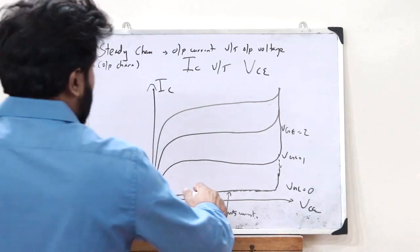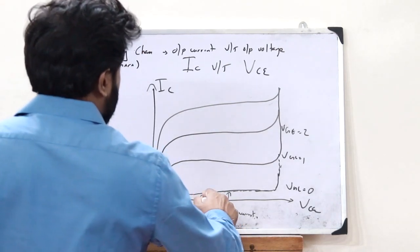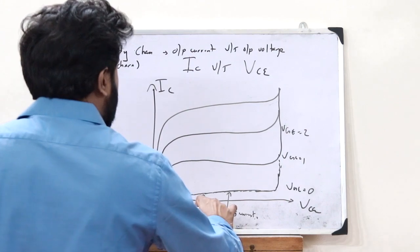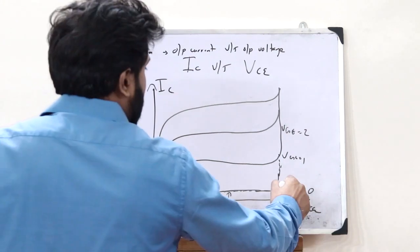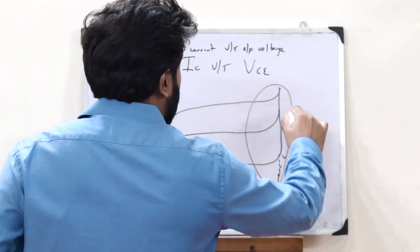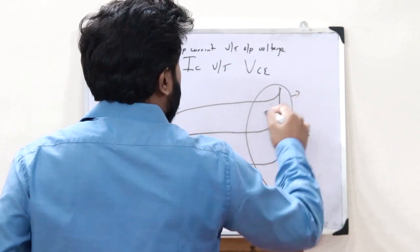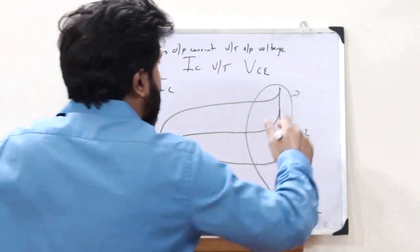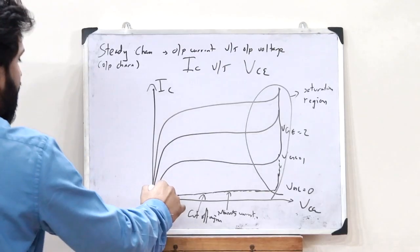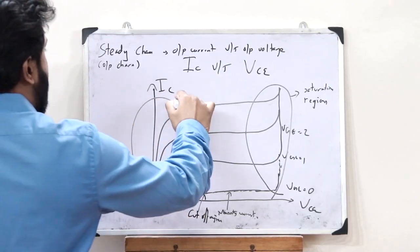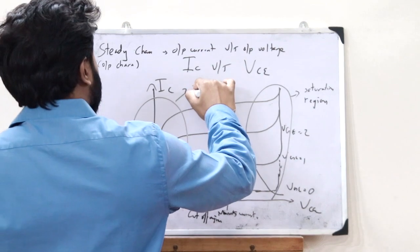Where no current flows, this region is referred to as the cutoff region of the IGBT. The region where saturation happens is referred to as the saturation region. And the region in between is referred to as the active region.